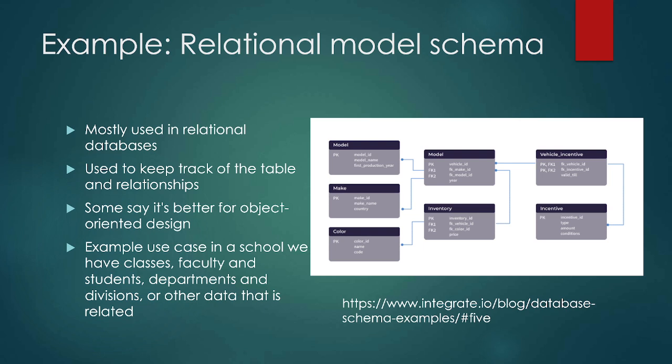Another example is using cars. If we have a table for the models of cars, we might end up having other tables that relate — like makes and colors. This could also end up relating to the inventory if we're talking about selling or renting cars. The inventory can tell us things like what color cars do we have, what makes and models do we have, what incentives do we have on offer right now, and how do those relate to what we have in inventory.